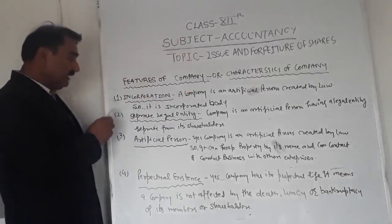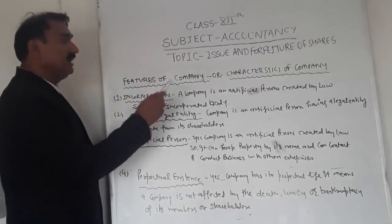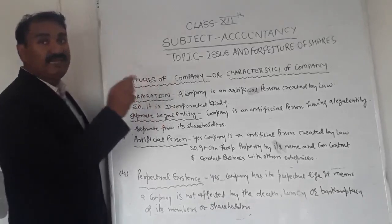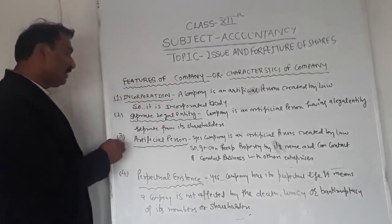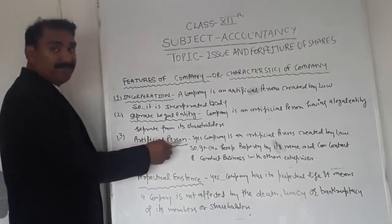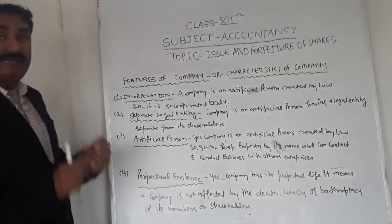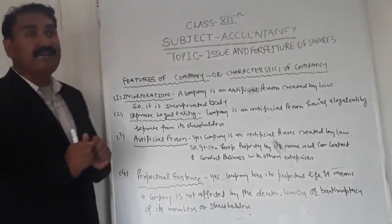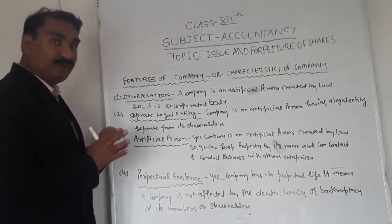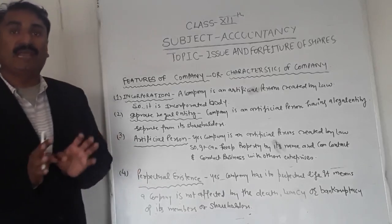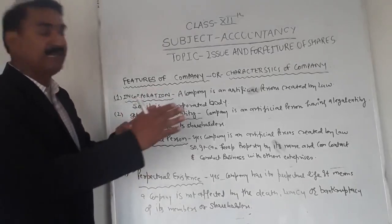The second feature is separate legal entity. A company is an artificial person having a legal entity separate from its shareholders or members. The third feature is artificial person. A company is an artificial person created by law, so it can keep its own property in its name, contact with other companies, or conduct business with any firm or enterprise.